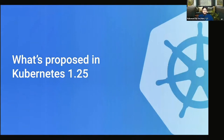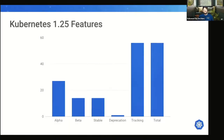Kubernetes 1.25 is right around the corner, going to be released next month on August 23rd. Currently the Kubernetes release is tracking 27 alpha features, 14 beta features, 14 features graduating to stable, and one deprecation. Note that the release cycle is still underway, so these numbers will change until the release is cut on August 23rd.